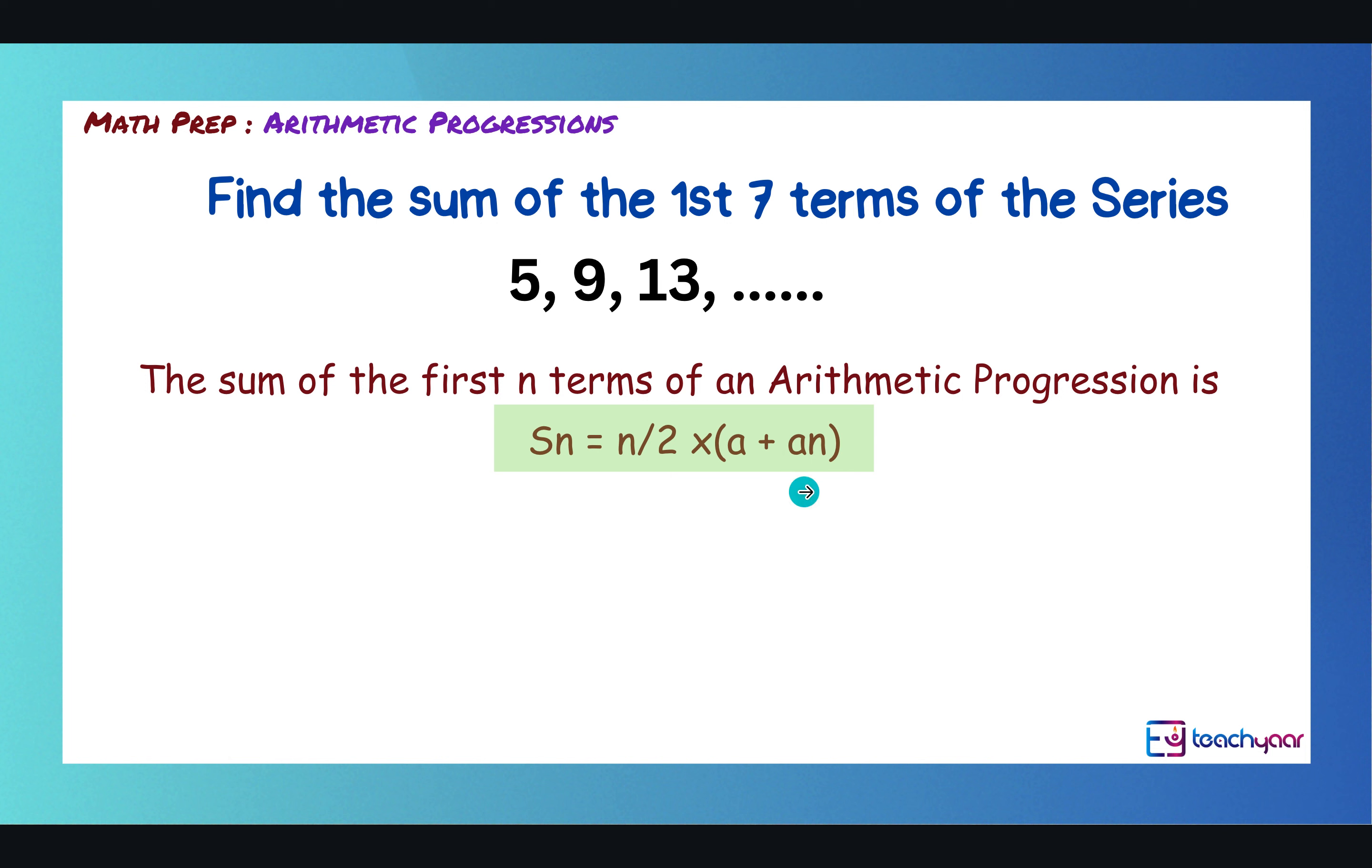So, how do you find the seventh term? Simple. We have a formula for that. First of all, a, which is the first term, is 5. We need to know the common difference, which is the difference between the adjacent terms. So, d is 9 minus 5, which is 4. 13 minus 9 is also 4. So, the common difference is 4.